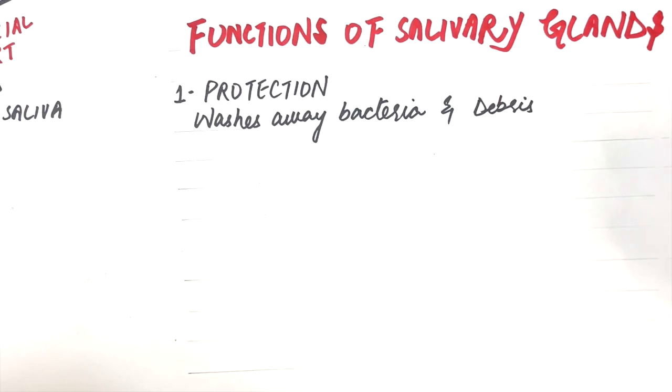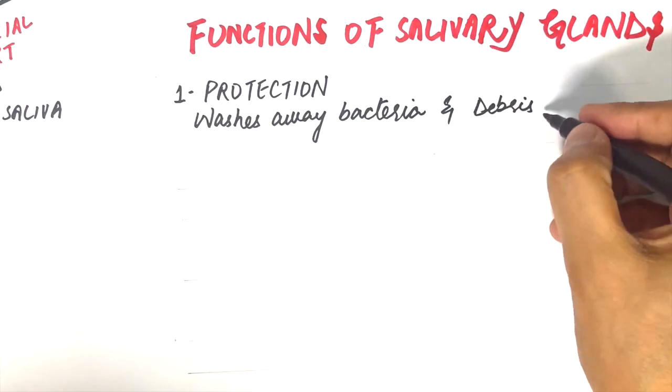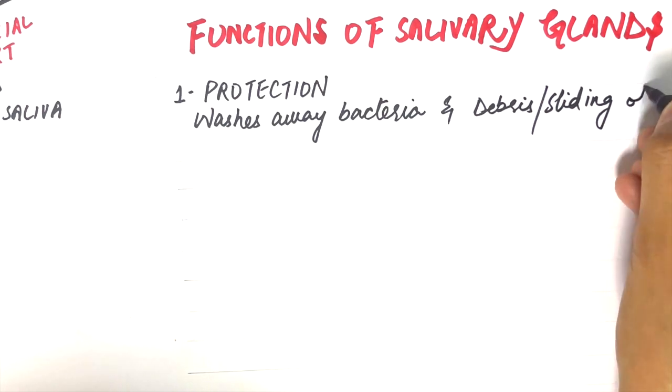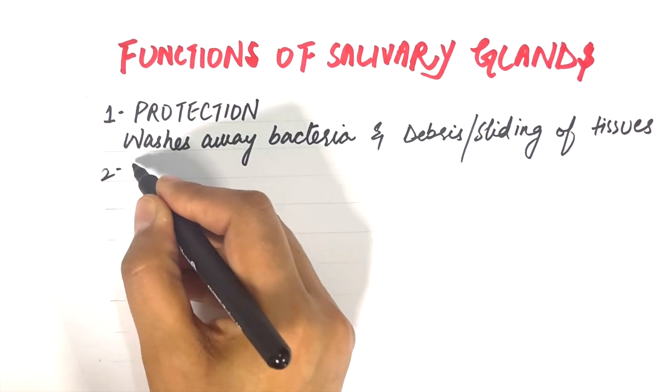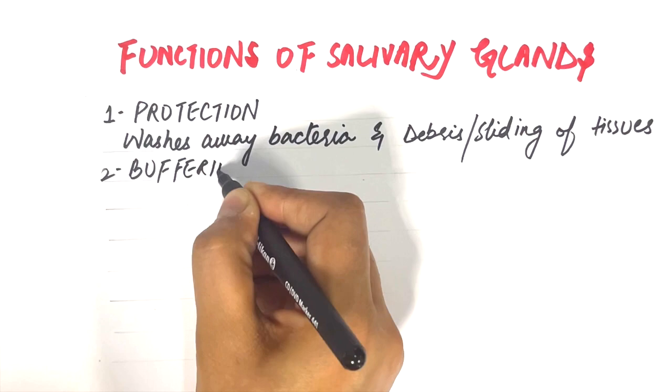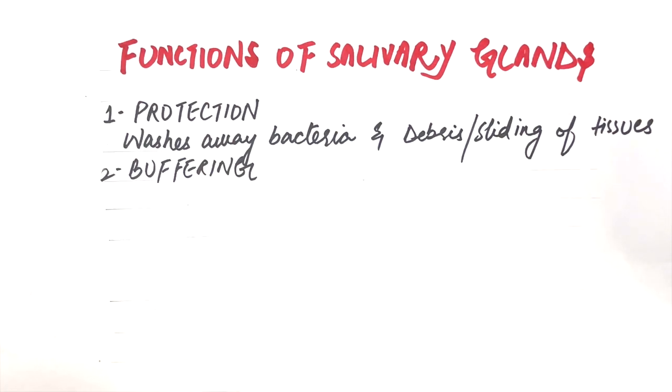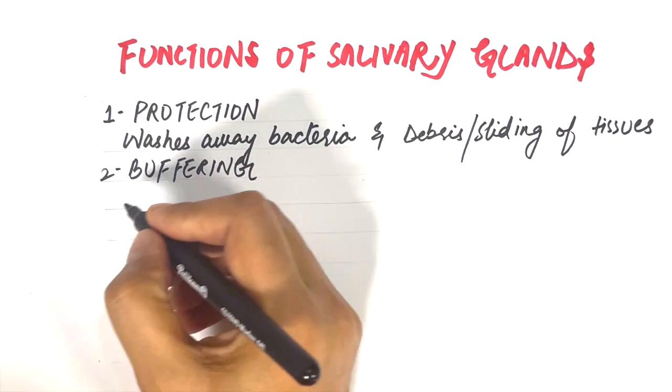Saliva also produces lubrication of tissues in the mouth, making it easy for us to slide tissues over one another during speech, eating, and swallowing functions. The bicarbonate and, to some extent, phosphate ions in saliva provide a buffering action that helps to protect the teeth from demineralization caused by bacterial acids produced during sugar metabolism.